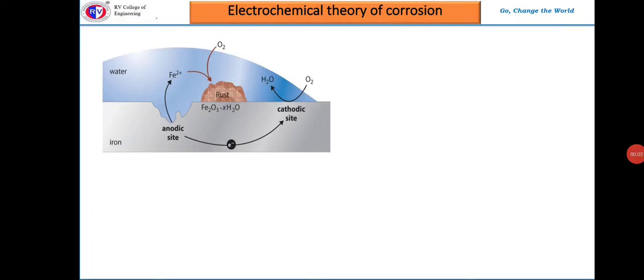Electrochemical theory of corrosion. Wet corrosion usually occurs in conducting liquid medium. This corrosion can be explained with the help of electrochemical theory.